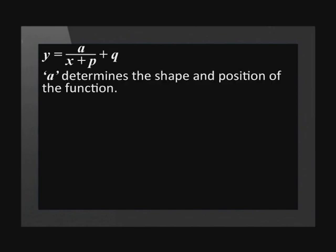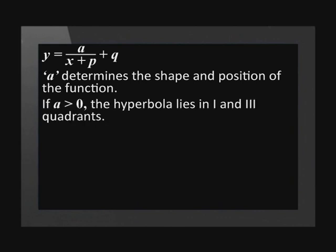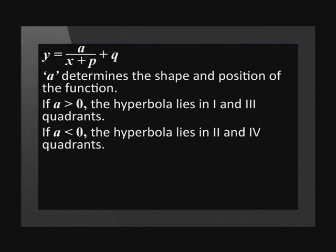a determines the shape and position of the function. If a > 0, the hyperbola lies in the first and third quadrants. If a < 0, it lies in the second and fourth quadrants.